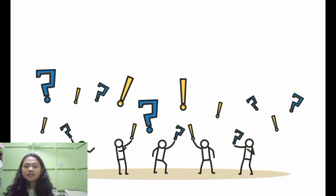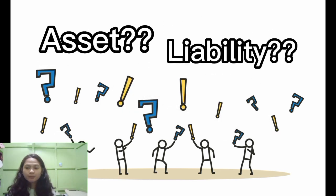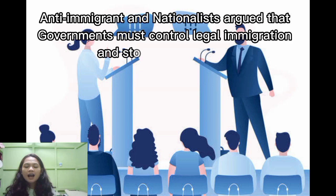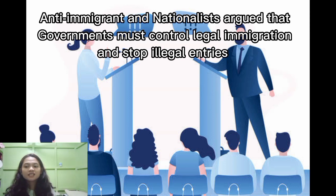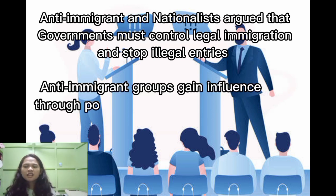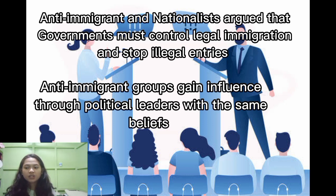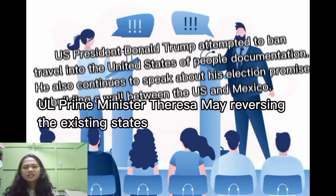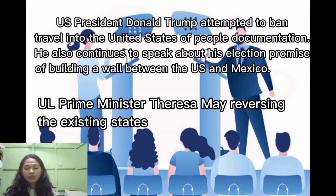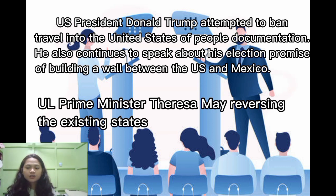The migrant influx has led to a debate in destination countries over whether migrants are assets or liabilities to national development. Anti-immigrant groups and nationalists argue that governments must control legal immigration and put a stop to illegal entry of foreigners. Many of these anti-immigrant groups are gaining influence through political leaders who share their beliefs — for example, U.S. President Donald Trump and U.K. Prime Minister Theresa May, who have been reversing existing immigration policies. Trump attempted to ban travel into the United States for people without documentation and continues to speak about his election promise of building a wall between the United States and Mexico.